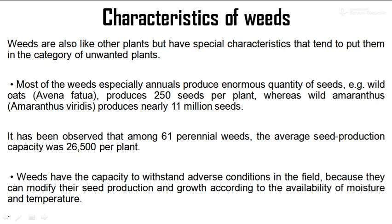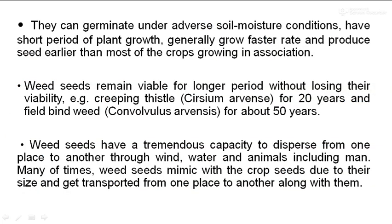Weeds have the capacity to withstand adverse conditions in the field because they can modify their seed production and growth according to the availability of moisture and heat. They can produce a large number of seeds with vigorous growth, germinate under adverse soil moisture conditions, have a short period of plant growth, and generally grow faster and produce seeds earlier than most crops.